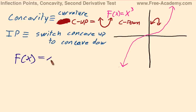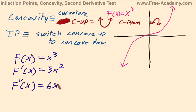F of X equals X to the third. F prime of X equals 3X squared. And F double prime of X equals 6X. We set that equal to zero, which occurs at X equals zero in this situation.